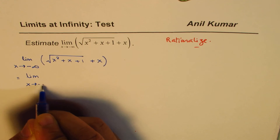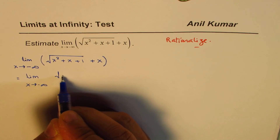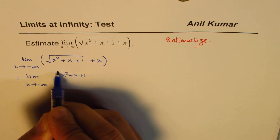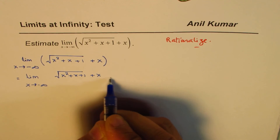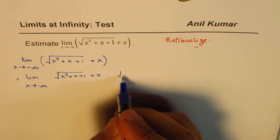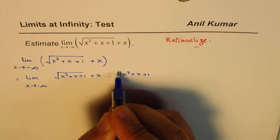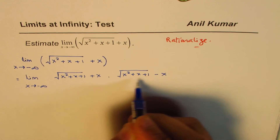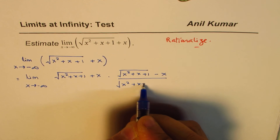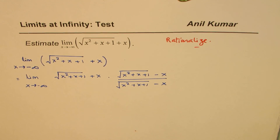The function is square root of x squared plus x plus 1, plus x. To rationalize, we multiply and divide by its conjugate, which is square root of x squared plus x plus 1, minus x — divided by square root of x squared plus x plus 1, minus x.